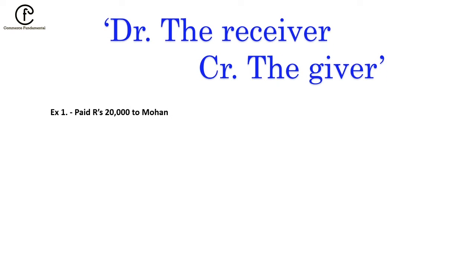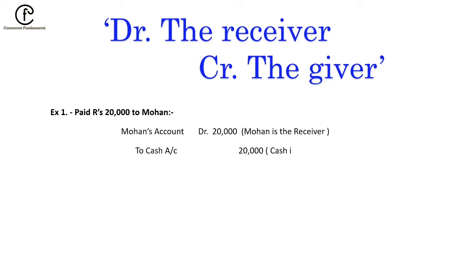For example, paid rupees 20,000 to Mohan. In this case, Mohan is the receiver, so Mohan's account will be debited. Cash is going out, so cash account will be credited by 20,000. Keep in mind: if only a name is written, the account will not be written, but 'Mohan's account' can be used.